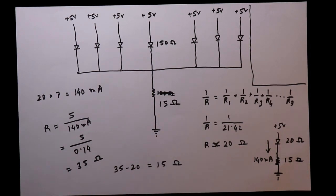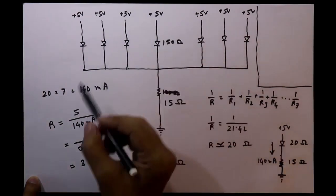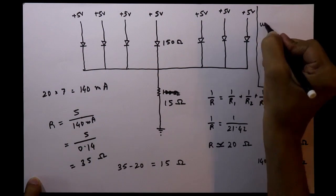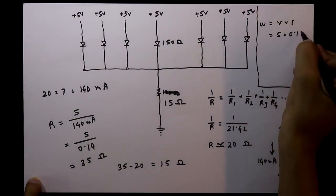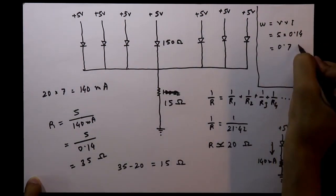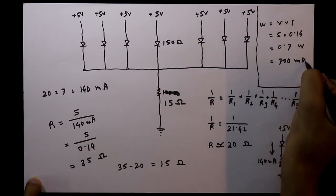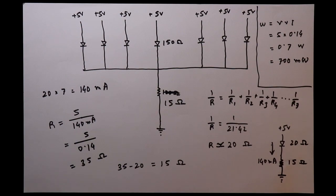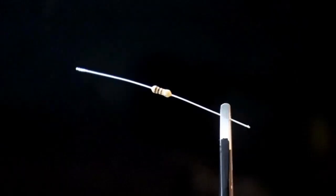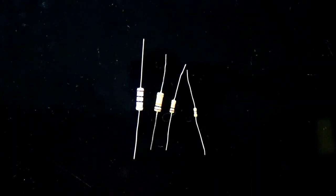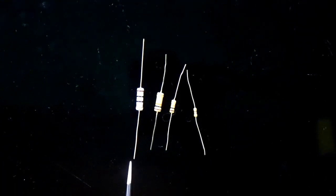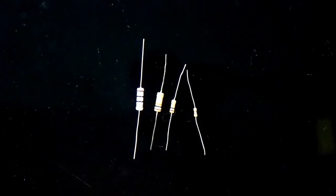There is a problem: supply voltage is 5 volts and current is 140 milliamperes, so total power = V × I = 5 × 140mA = 0.7 watts (700 milliwatts). A regular 1/4-watt resistor is only rated at 250 milliwatts — far too small. We need a higher-rated resistor. The size comparison shows 1/4W, 1/2W, 1W, and 2W resistors; we prefer 2 watts for more safety.